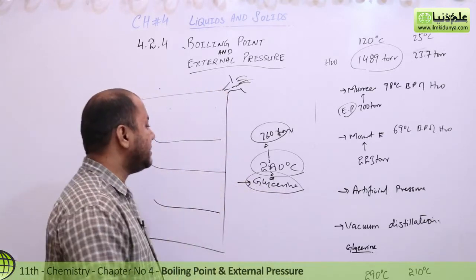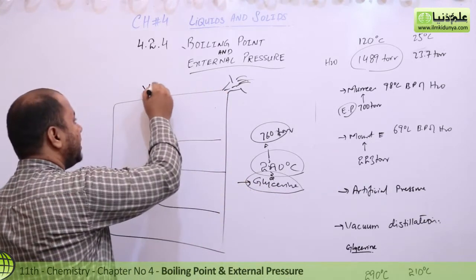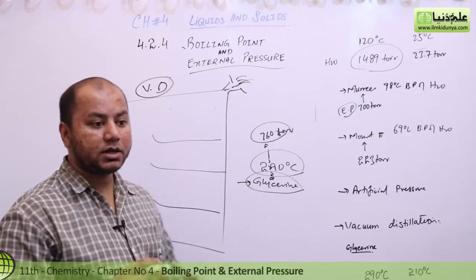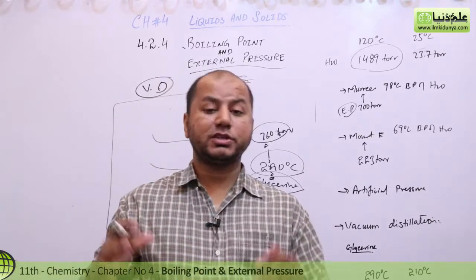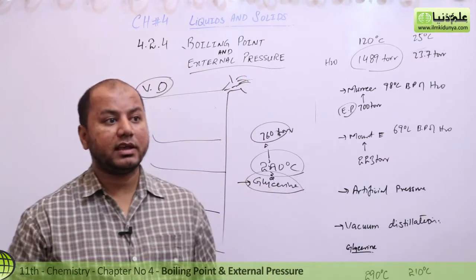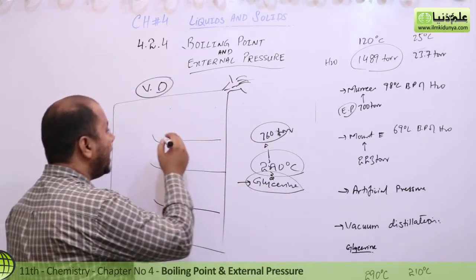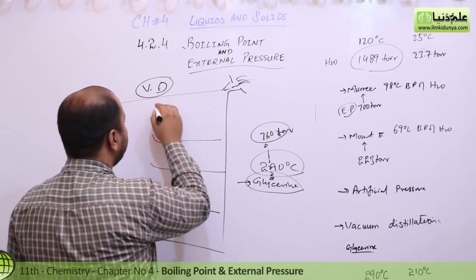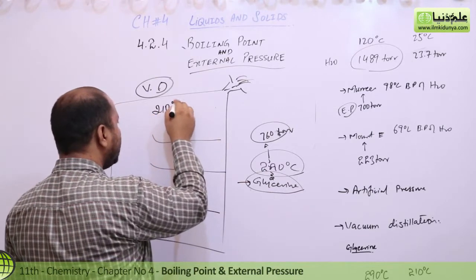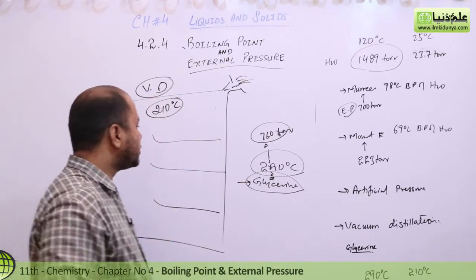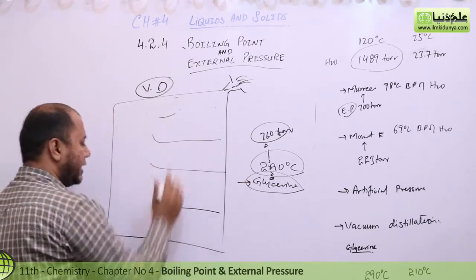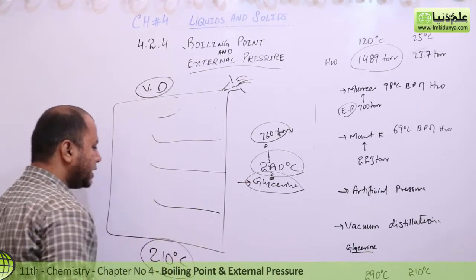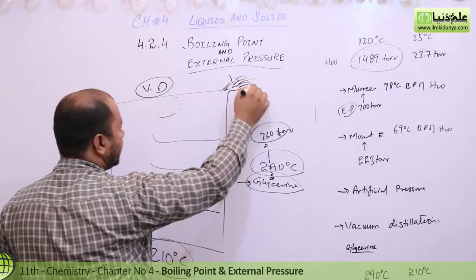This is where vacuum distillation is useful. Vacuum distillation is a method that allows us to separate and distill glycerine. For example, at 210 degrees Celsius, glycerine is not decomposed — it is still stable at that temperature.